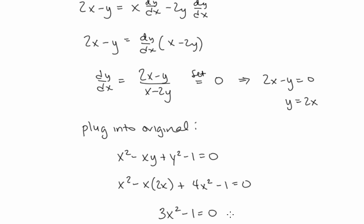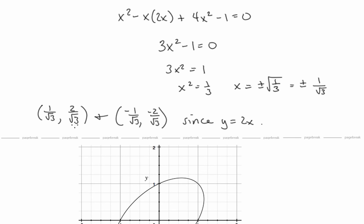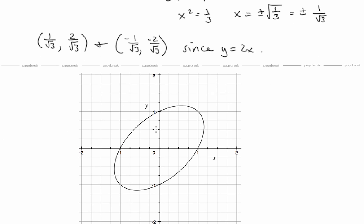Substituting y = 2x into the original equation gives 3x² minus 1 = 0, so x² = 1/3 and x = ±1/√3. These are the x-coordinates where the graph has horizontal tangent lines. The corresponding y-coordinates are y = 2x, so they are ±2/√3. On the graph, these are the two points where the curve has a horizontal tangent line.